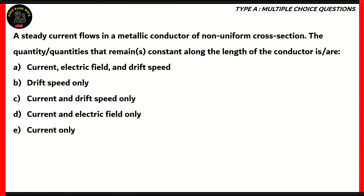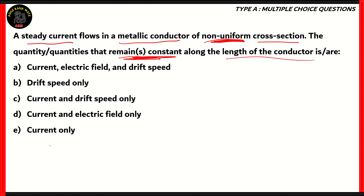Now let's look at the final question. A steady current flows in a metallic conductor of non-uniform cross-section. The quantity or quantities that remain constant along the length of the conductor is or are: current, electric field, and drift speed; drift speed only; current and drift speed only; current and electric field only; or current only. We need to find which of the three quantities — current, electric field, or drift speed — is not dependent on the cross-sectional area, since the area varies along the conductor.